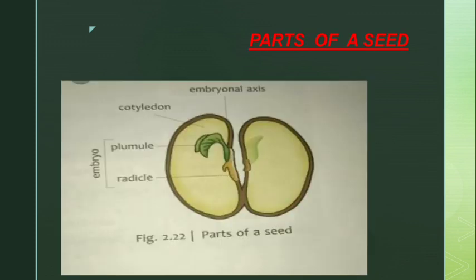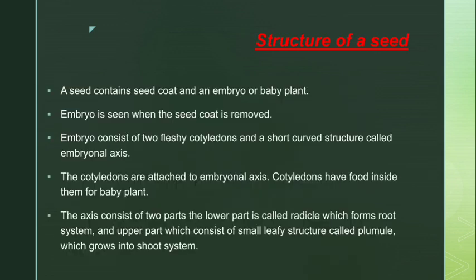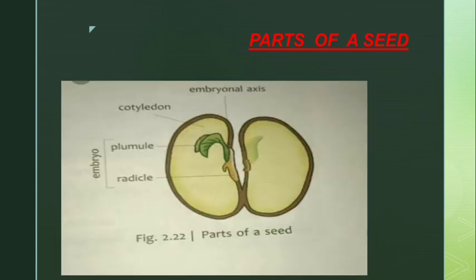The function of cotyledons is to store food for the baby plant. When the embryo starts growing, it changes into a baby plant and the baby plant gets food from the cotyledon. The embryonal axis consists of two parts: the lower part is called the radicle, which forms the root system, and the upper part, which consists of a small leafy structure called the plumule, which grows into the shoot system.